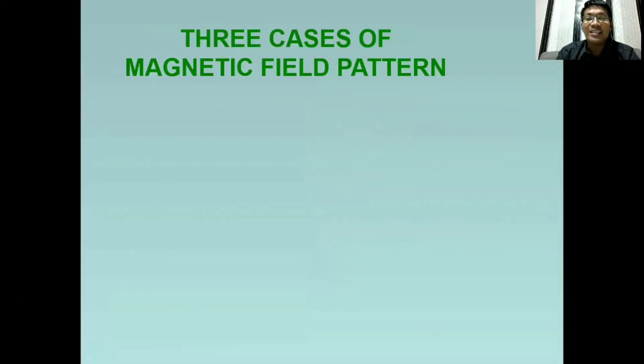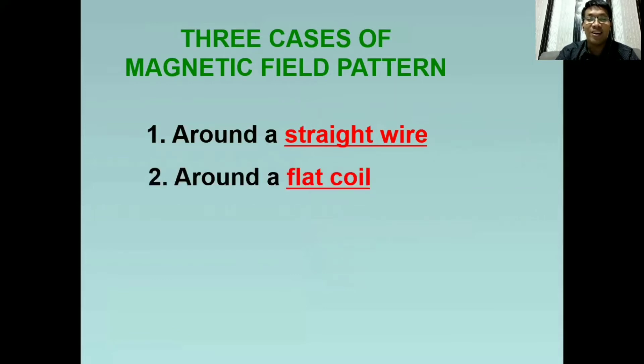All throughout this lesson, i-de-discuss natin o i-de-describe natin ang magnetic field line ng mga sumusunod. Meron tayong three cases. The first one is a conductor, which is a straight wire. Second, a flat coil. And lastly, ang tinatawag natin, solenoid. In this lesson, we will understand the magnetic patterns of the following cases. Para makita rin natin later on o ma-apply din natin yung concept sa electric motor.